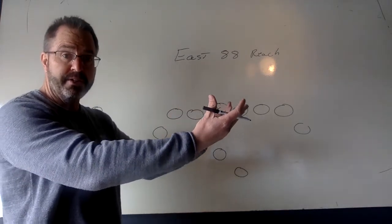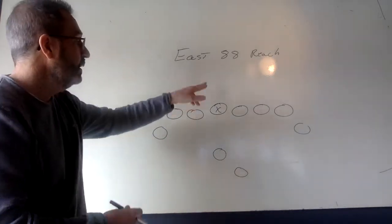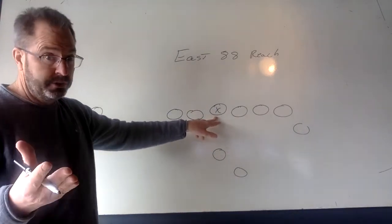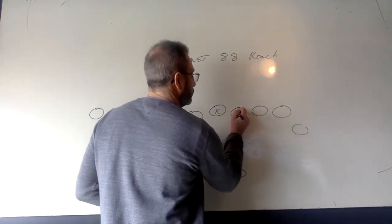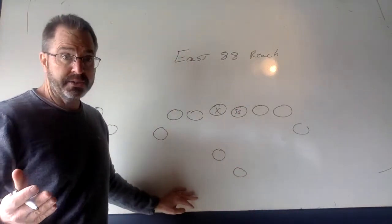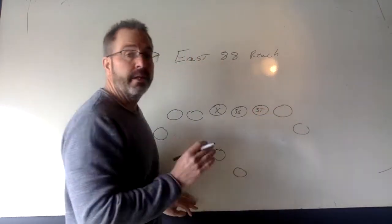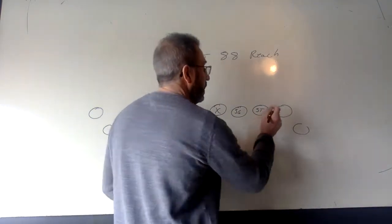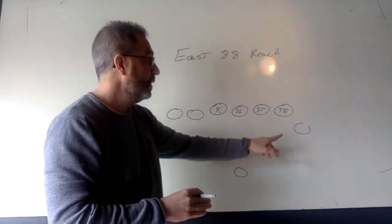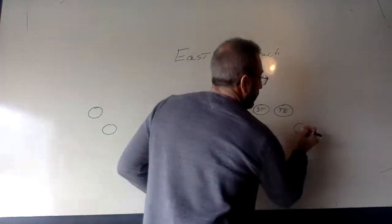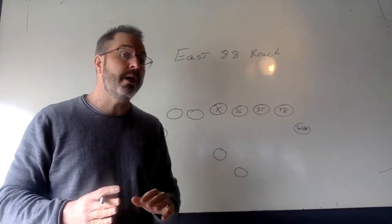So anybody who's a linebacker or a DB knows the position they're going to be playing when I call it out. Circle with the X. That's our center. Jacob Langlose, probably somebody else. To the right, we're going to put our strong guard. Alex and somebody else. Our strong tackle. Connor and somebody else. Our tight end. Braden and somebody else. Our wingback, who may be a couple of different people right now. I'm not sure.